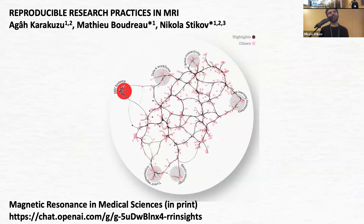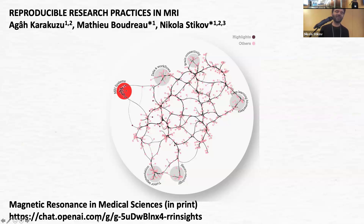We published another NeuroLibre preprint called 'Reproducible Research Practices in MRI' for a Japanese journal, Magnetic Resonance in Medical Sciences. It's fun because we created a Sakura map, asking a clustering algorithm to group MR papers based on themes — and it identified a cluster that had to do with reproducibility in MRI. These are the papers highlighted in the journal MRM, and from those papers and interviews we created a custom GPT that you can interact with and ask questions.